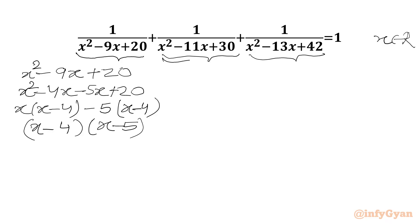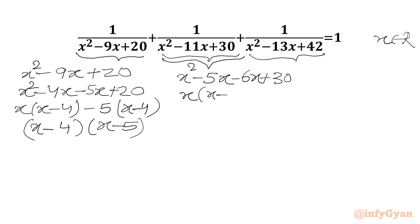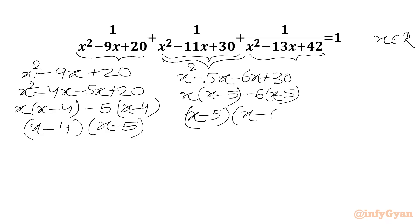Now we will take x squared minus 11x plus 30 and split minus 11x as minus 5x minus 6x, then we have plus 30. From the first two terms x is common giving (x minus 5), and from the last two minus 6 is common, retaining the same bracket (x minus 5). So our factorization would be (x minus 5)(x minus 6).